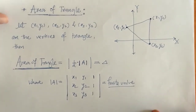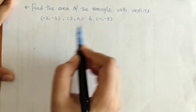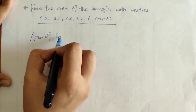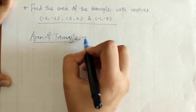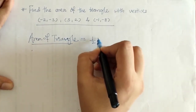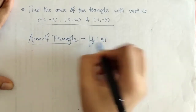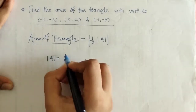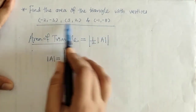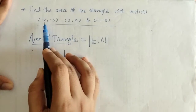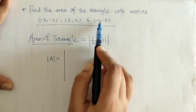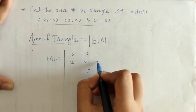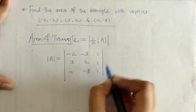Now let's see one example. We have been given three vertices and we have to find the area of the triangle. This is the mod of 1/2 into determinant of A. To obtain this determinant, we write down the three vertices: (x1, y1), (x2, y2), (x3, y3), placing them as rows, with a third column of 1, 1, 1.